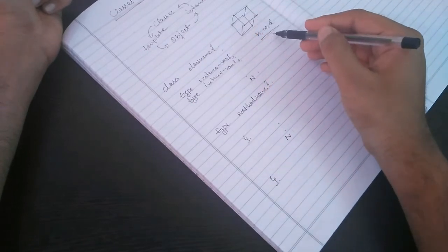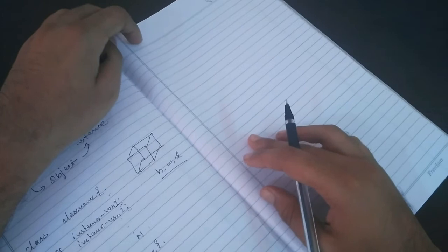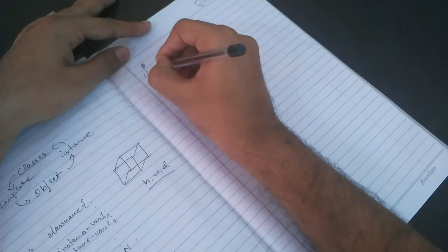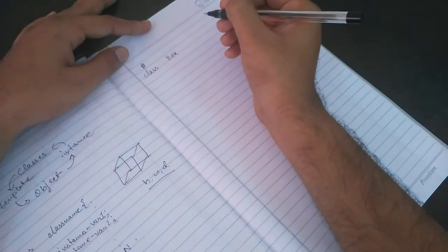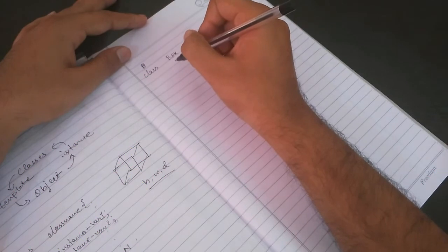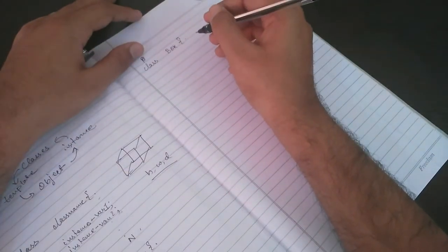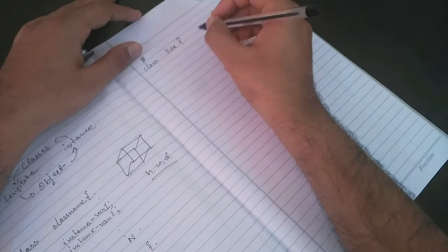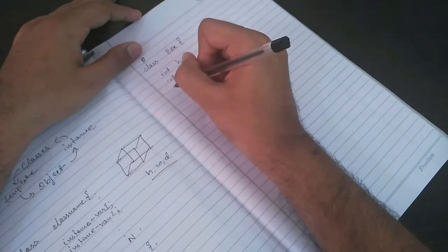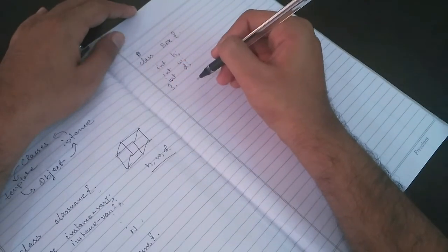Now for our example of box, we will create a class. Class Box. We've given the name as Box. Remember one thing: the name of a class should always start with a capital letter, and the first character cannot be a number. Now what we require? We require to store the width, height, and depth of the box. So we will define all three: integer height h, integer width w, and integer depth d. This is our class definition.